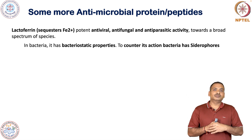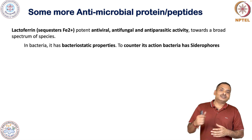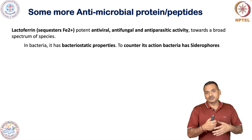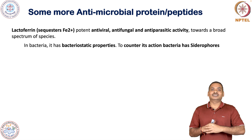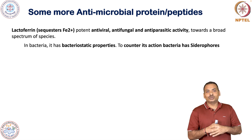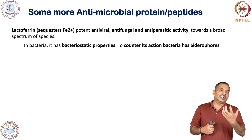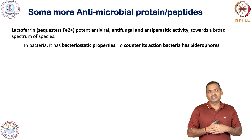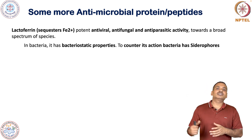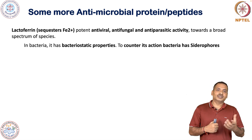Lactoferrin has a bacteriostatic property — it stops the growth of bacteria. To overcome this problem, bacteria have various mechanisms to obtain iron and maintain their multiplication. For example, they have siderophores, which are iron-binding proteins. These siderophores take up iron and slowly transport it inside the cell to protect against the effect of lactoferrin.